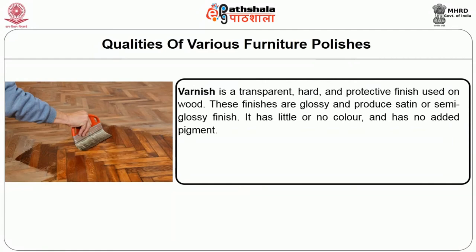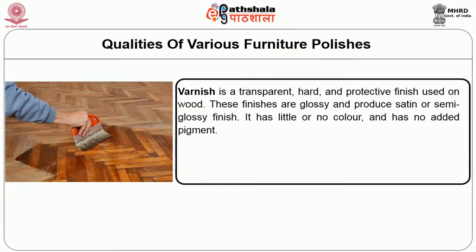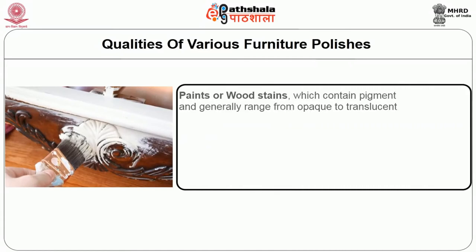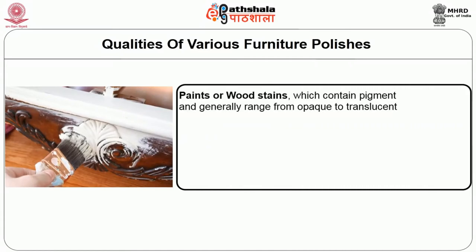Another important wooden finish is varnish, which is a transparent, hard and protective finish used on wood. These finishes are glossy and produce a satin or semi-glossy finish. Varnish has little or no color and has no added pigment. The next polish is paint or wood stain, which contains pigment and generally ranges from opaque to translucent in nature.